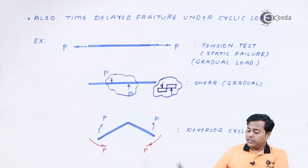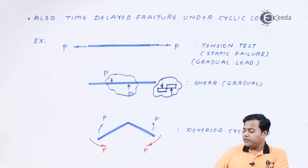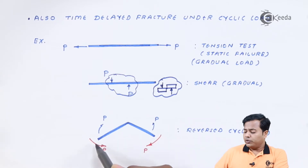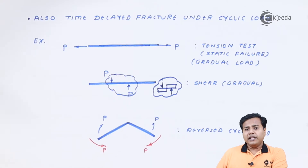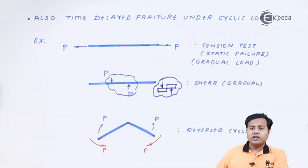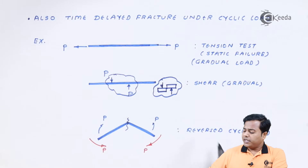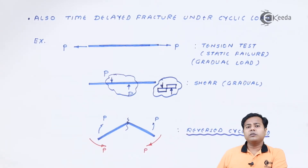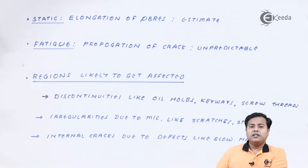Now let us consider the phenomenon where a bar or metal strip is given reverse cyclic loads — meaning the load at the same time will try to bend it downward, and in the next cycle will try to bend it upward. It was observed that, compared to the tension and shear examples, failure occurred at that section much, much before the expected time. This important concept came to light: reverse cyclic loading. Due to this loading, failure occurred much sooner, and that's why that failure has been given the name fatigue failure.